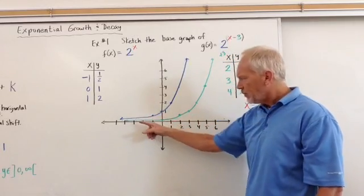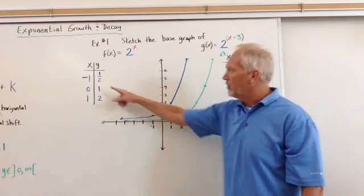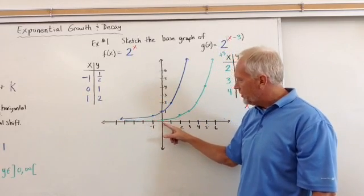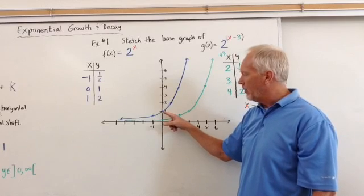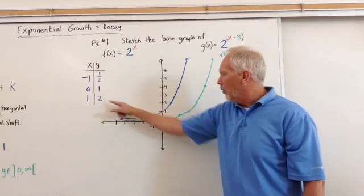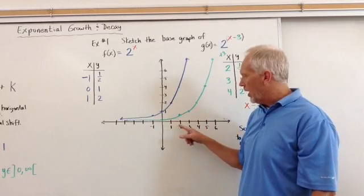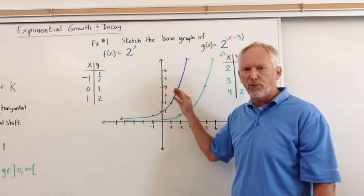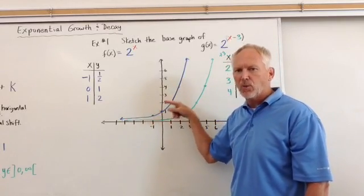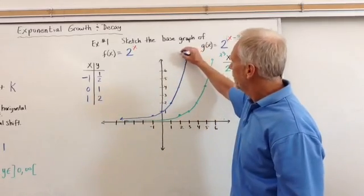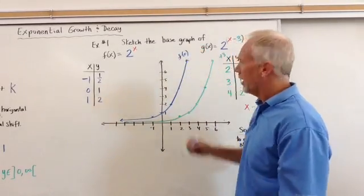Why? Because negative 1 gives you the fraction of the number, 0 always gives you a 1 as a y value, and then 1 always gives you the number back itself. So it makes it really simple to graph. So if I go to plug those numbers on the x, y coordinate plane, then I'll just go negative 1 will give me a half. I go to 0 and 1. That means I have a point there. And then at 1, 2. We could keep going and go out to 2, that would get us to 4 and so forth. But this blue line is representing the base graph. So this is our f(x).